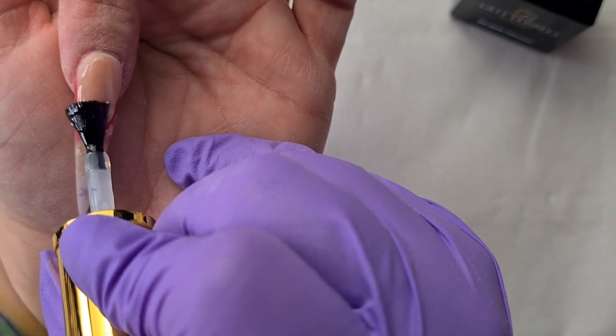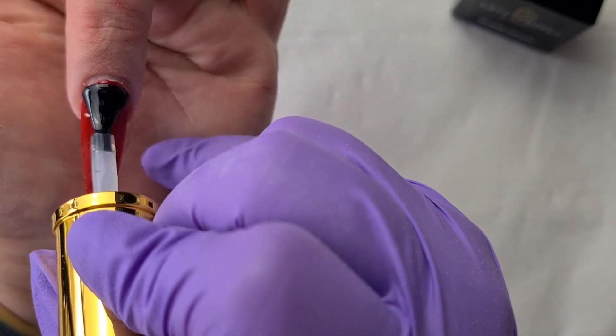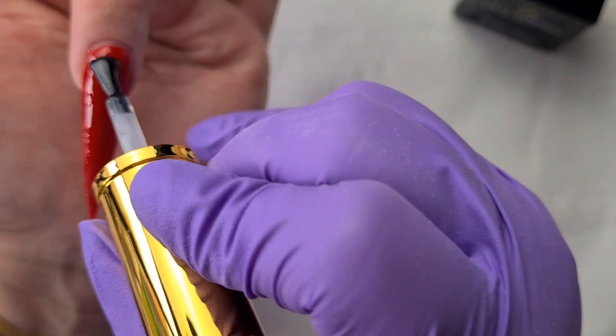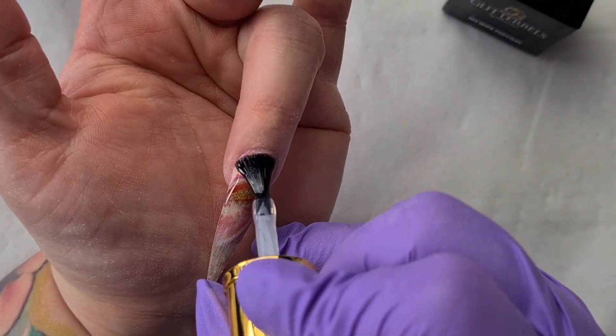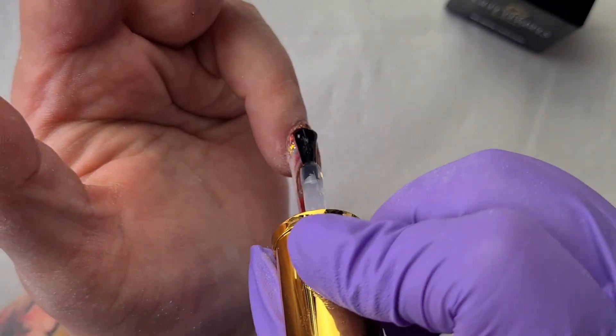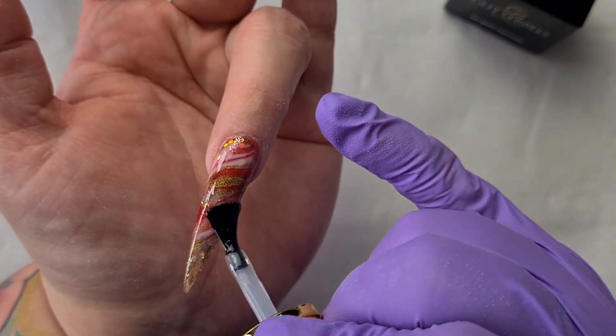This is my favorite part doing the nail when I'm putting the top coat on. Don't forget you have to cure this in the lamp for 60 seconds. Let me know which one is your favorite part. I just love when the glitter comes alive, that's my autumn favorite. I love glitter.